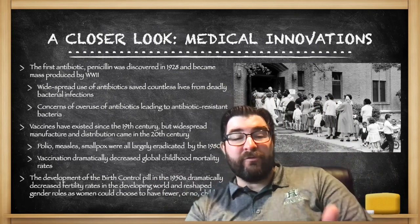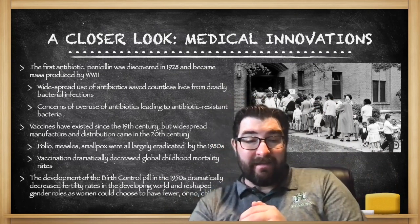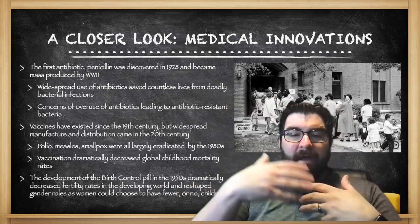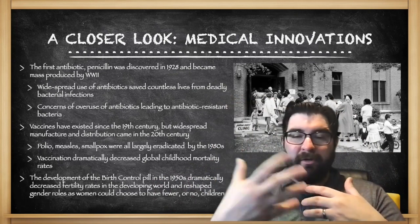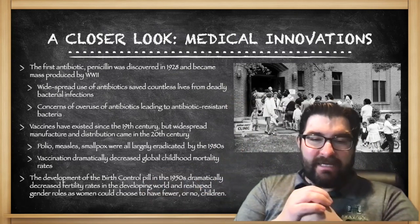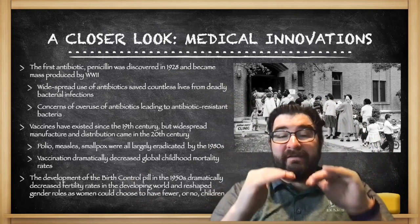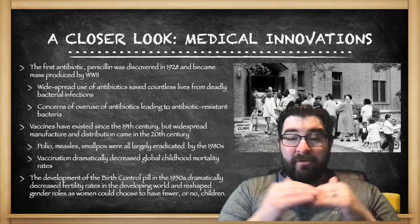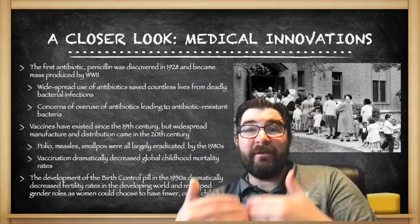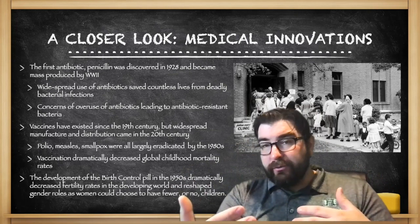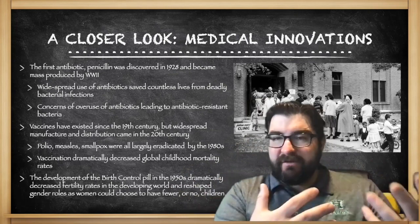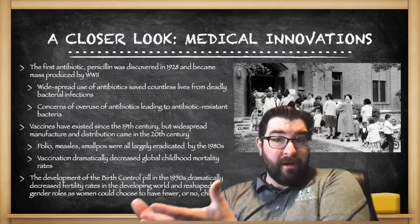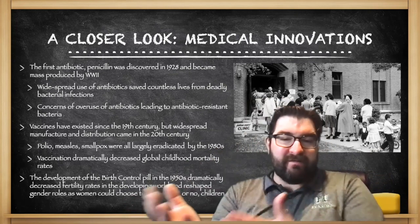Vaccination will dramatically decrease global childhood mortality. The development of the birth control pill, first in the 1950s and approved in the United States in the 1960s, dramatically decreased fertility rates in both the developing and developed world. It reshaped gender roles as women could now choose when to start having children and how many children to have, giving women more options in their career and family choices.